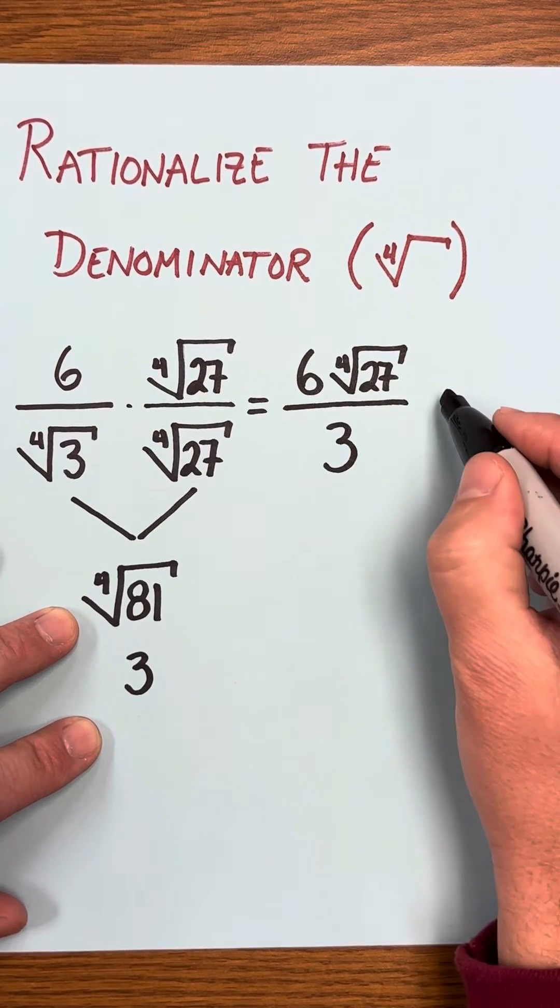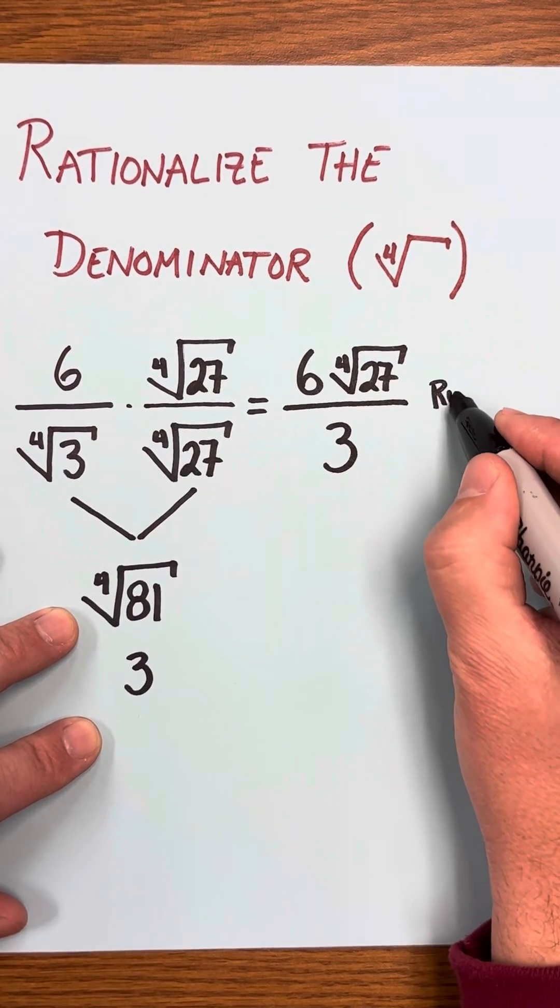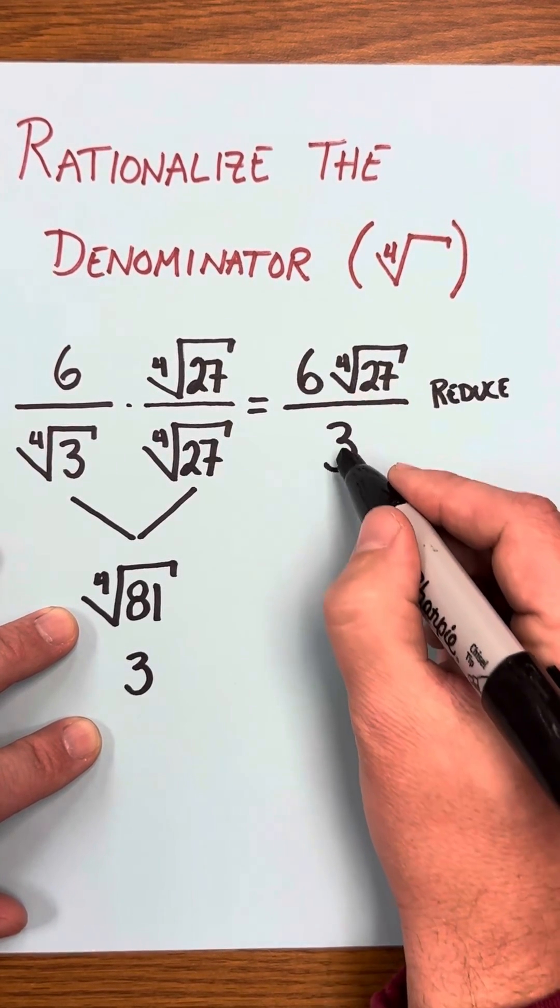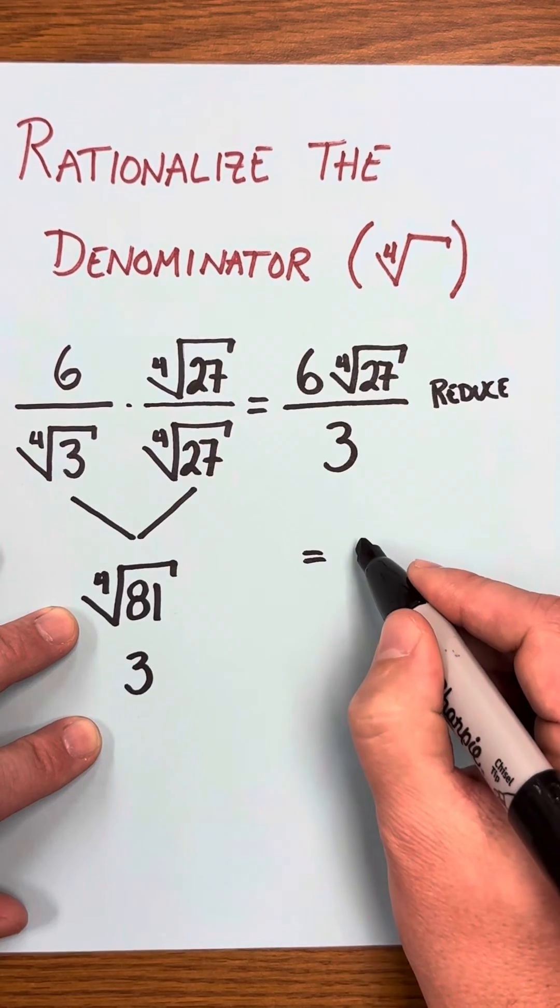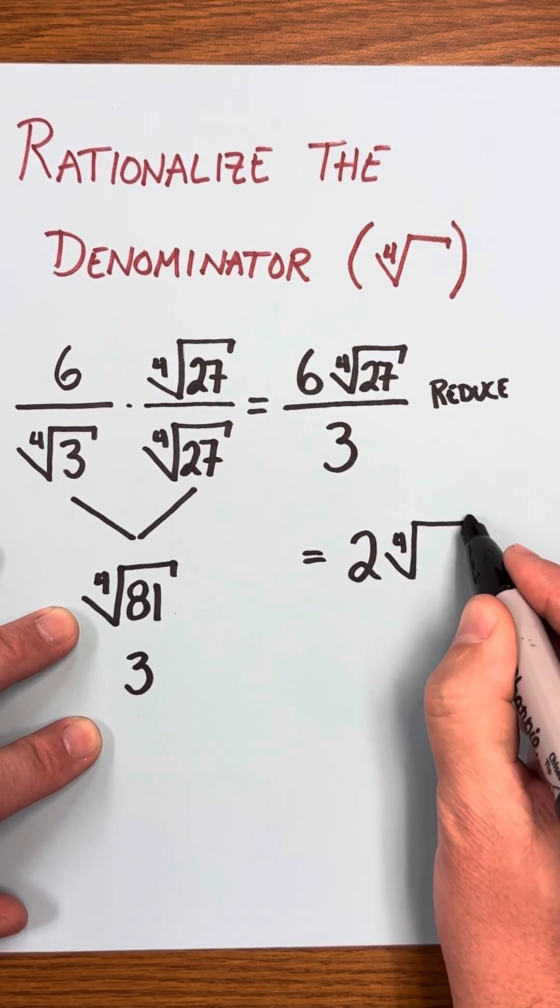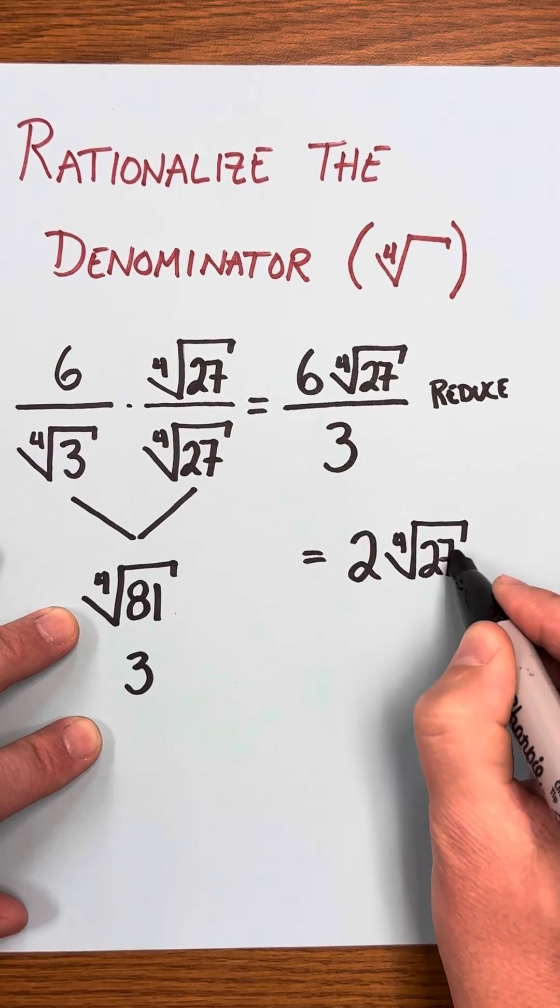And again, always remember to check to see if you can reduce the fraction, because here 6 and 3 can both divide by 3. So we do that, we end up with 2 fourth root of 27.